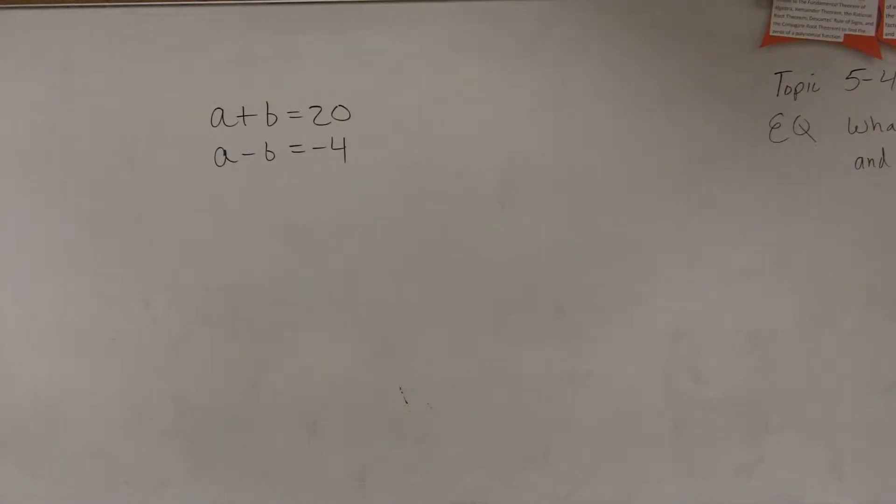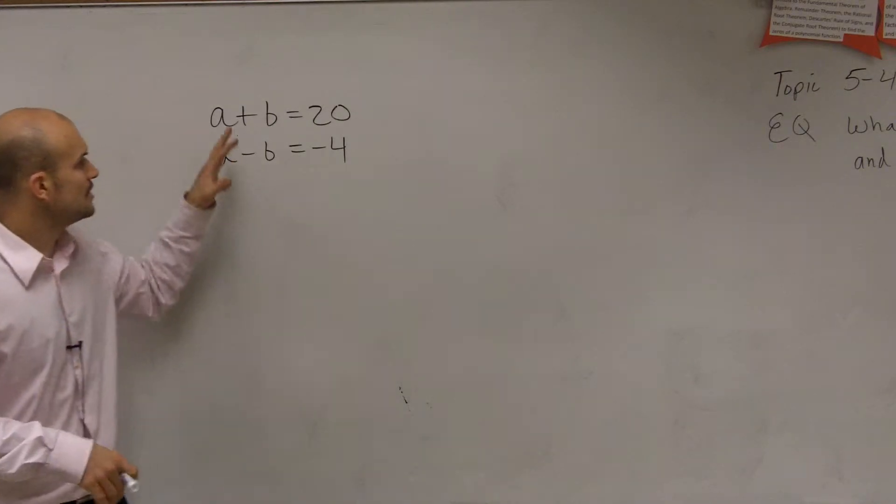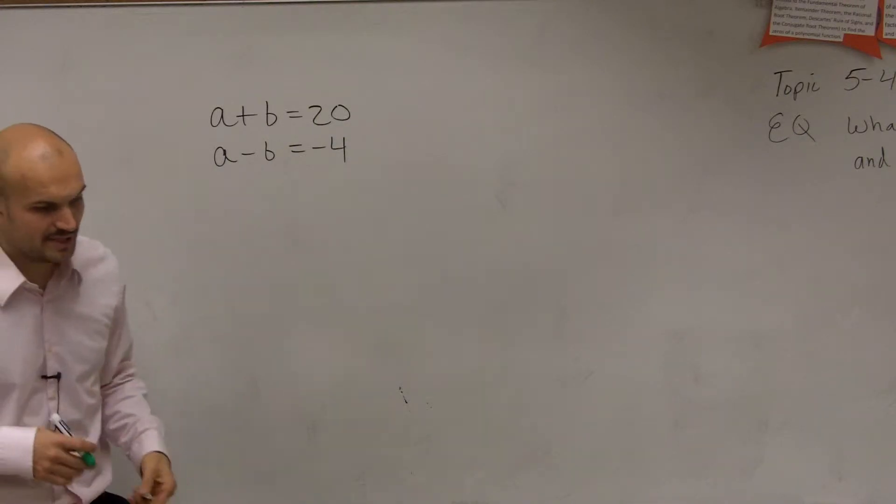Please make sure you guys write this down for me, alright? So therefore I can use it and when you're having questions on this information I can help you out. So we have this system: a plus b equals 20 and a minus b equals negative 4.